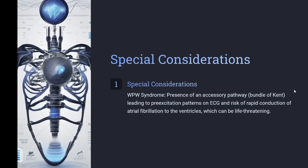Acute unstable SVT: Wolff-Parkinson-White syndrome involves the presence of an accessory pathway (bundle of Kent), leading to pre-excitation patterns on ECG and risk of rapid conduction of atrial fibrillation to the ventricles, which can be life-threatening.